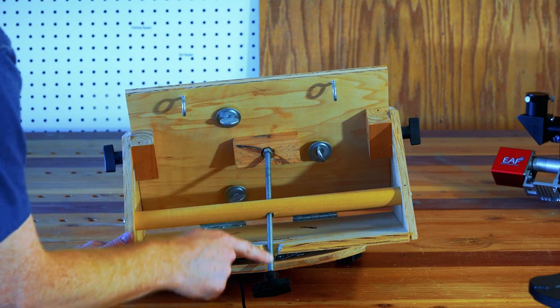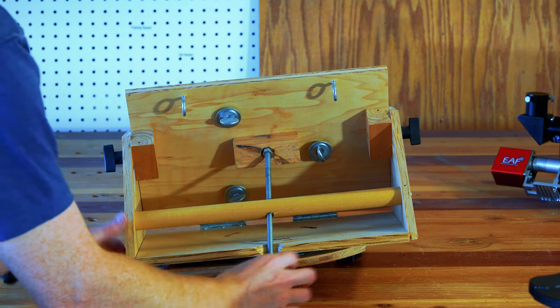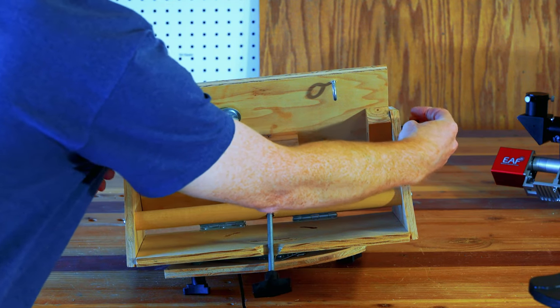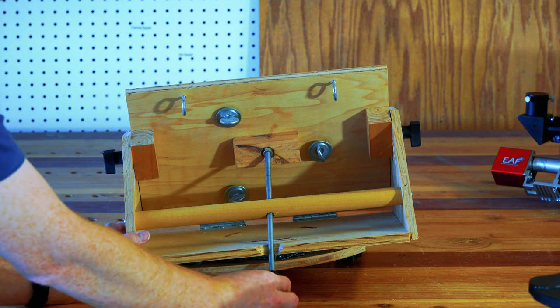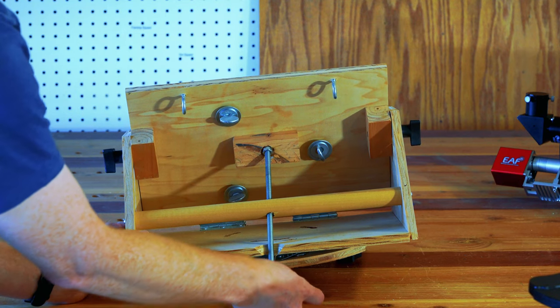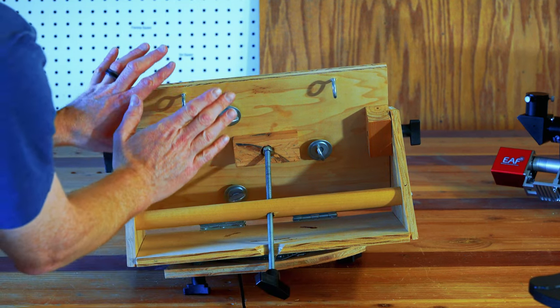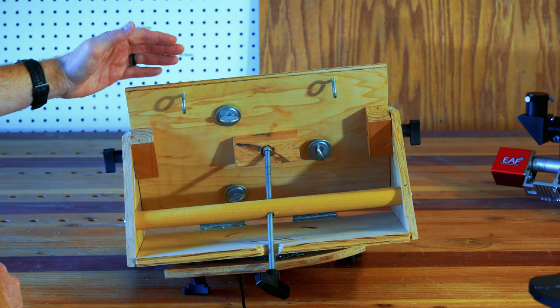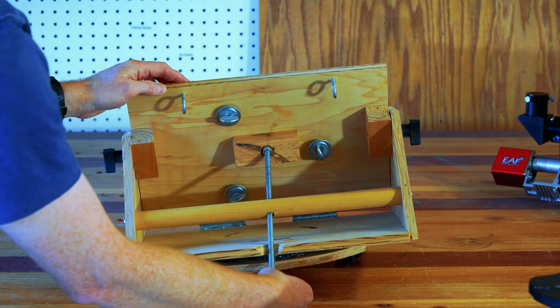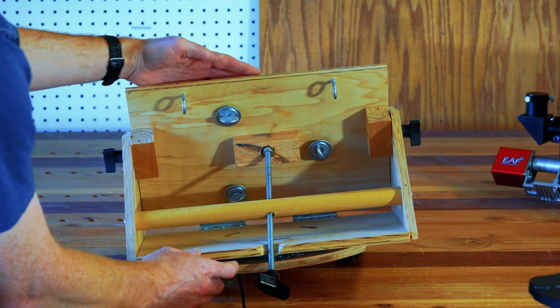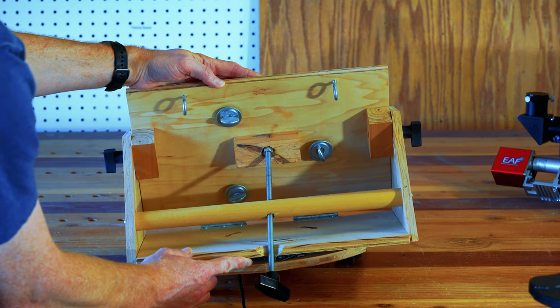The purpose of this threaded rod here is when you loosen these side handles, you can make very fine adjustments to your angle by turning this, and it will very slowly push the angled piece up. Likewise, you can turn it the opposite direction, and the weight of the telescope will push it back down.